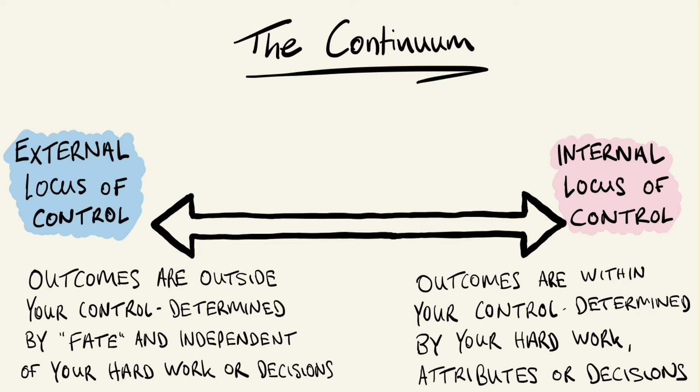Although we talk about people having an internal or an external locus of control, it's not always a case of people definitively being one or the other. The locus of control is more of a continuum that stretches from being highly internal on one side to highly external on the other, with all the varying degrees in between. For example, somebody could have a low external locus of control and sit somewhere between the two extremes.